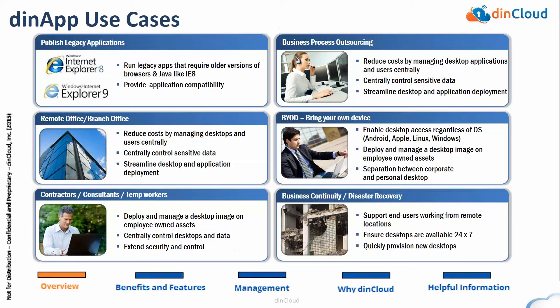As far as use cases, a lot of organizations — especially larger ones — have legacy applications where they need older browsers like IE8 or IE9 with older versions of Java, but they also need to run current versions like IE11 to access current applications. The problem is you can't run two browsers on the same machine. What we've been able to do is publish the older versions of browsers like IE8 and IE9, so users can access their legacy applications through a published application and access traditional applications through the tools they're using today.